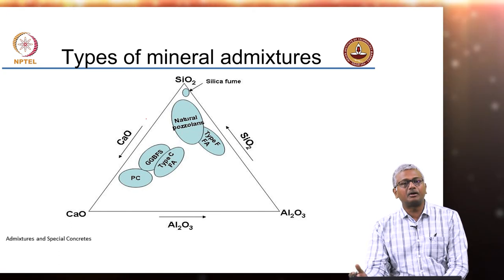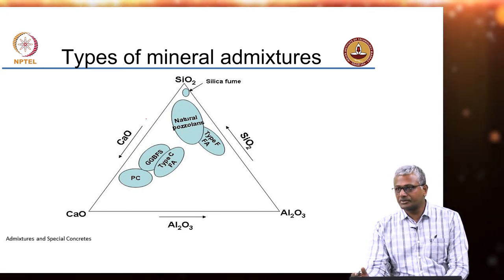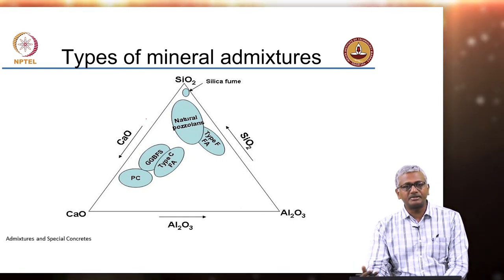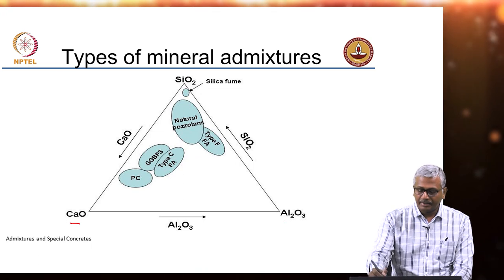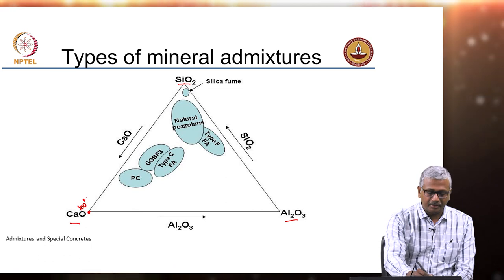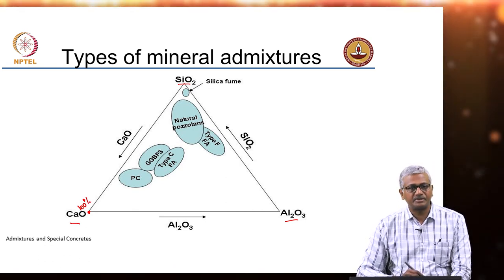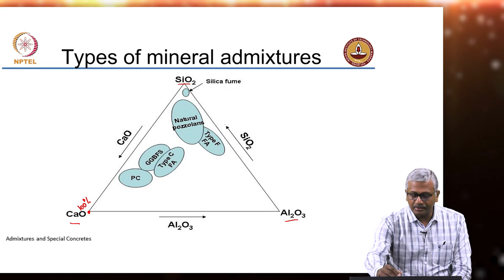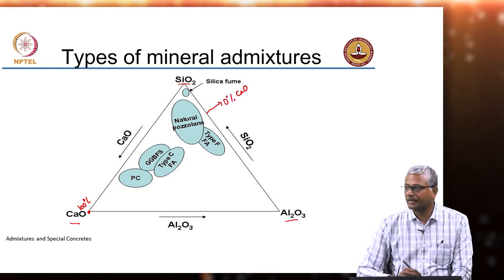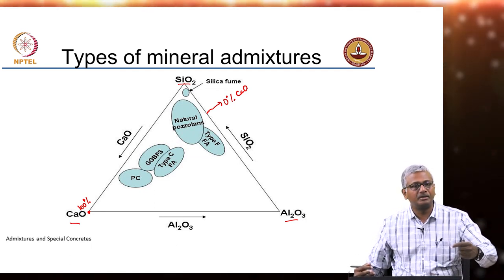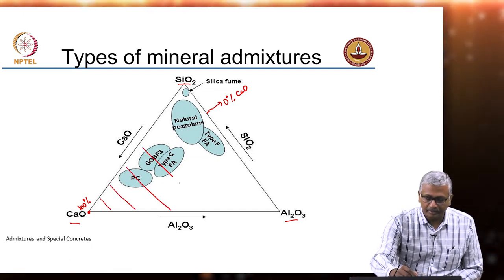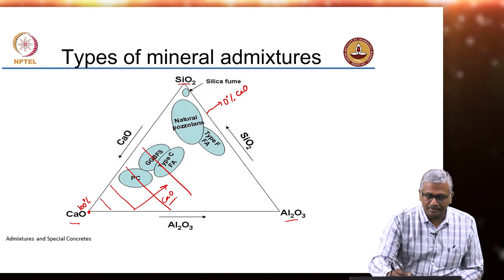If you look at the typical compositions of these mineral admixtures, usually cementitious materials, the composition is expressed on this ternary diagram between calcium oxide, aluminum oxide, and silica. Each vertex is 100% of that material, so this vertex represents 100% calcium oxide. This line represents 0% calcium oxide — it is basically the line between silica and alumina, so CaO is 0. That means if you go along parallel lines like this, the fraction of CaO decreases.